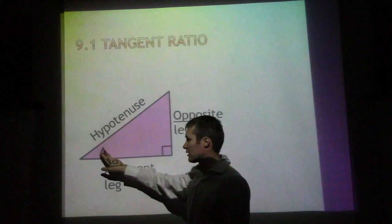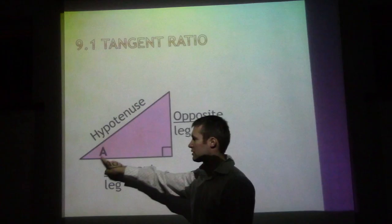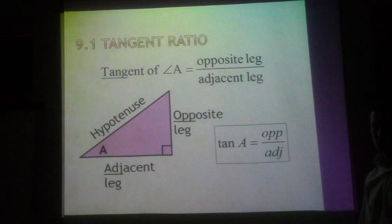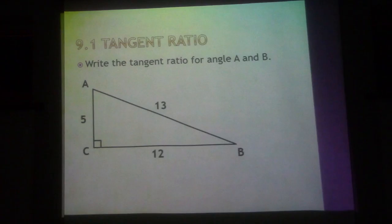The angle next to it, angle A, is made up by the hypotenuse and adjacent leg. The tangent ratio is opposite over adjacent. Write that down—we shorten it to opp over adj. So the tangent of an angle is the opposite leg over the adjacent leg.